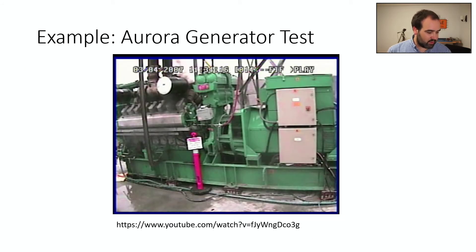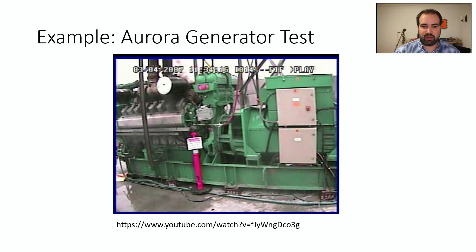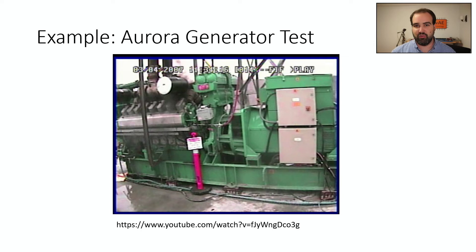As a cool example, there's the Aurora generator test — an example of how it's possible for a cyber attack to cause physical damage. This actually destroyed a very large industrial generator. The question was whether this type of cyber attack could be used in warfare, because it's actually causing severe damage to a power grid.